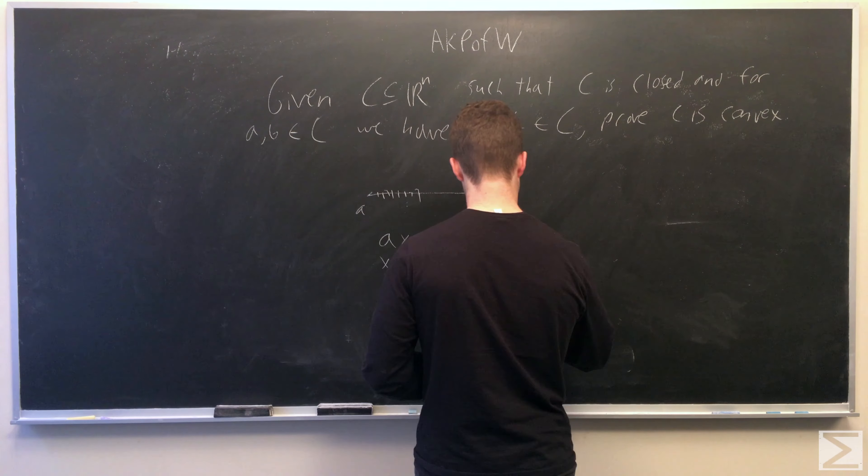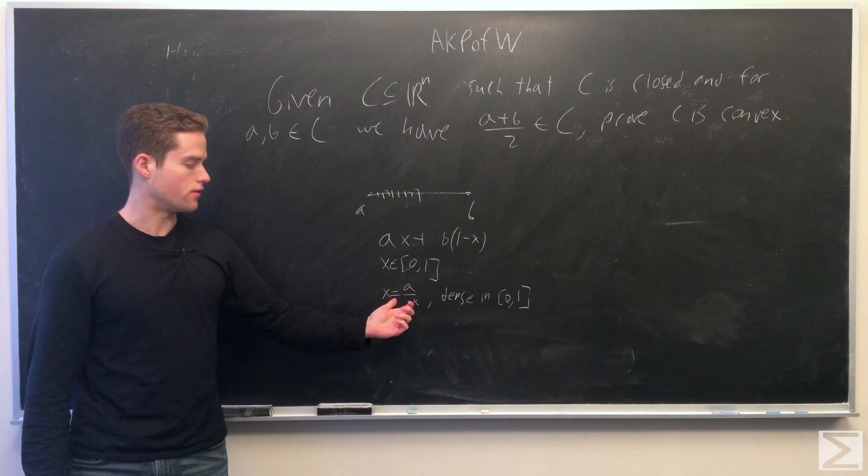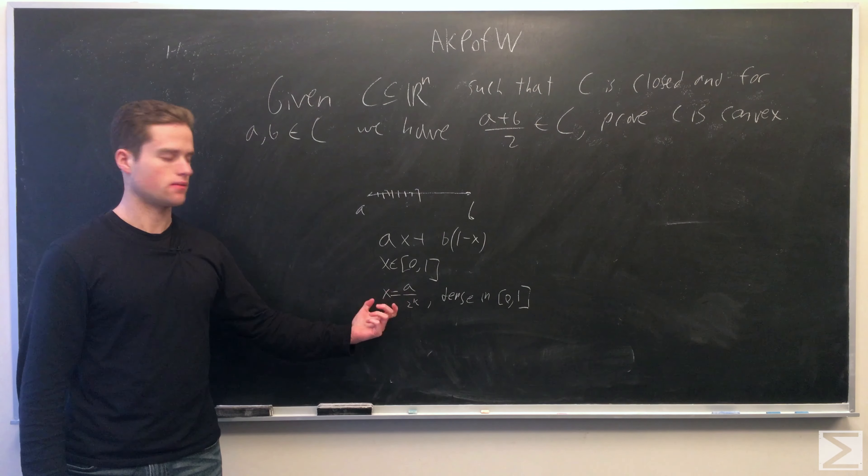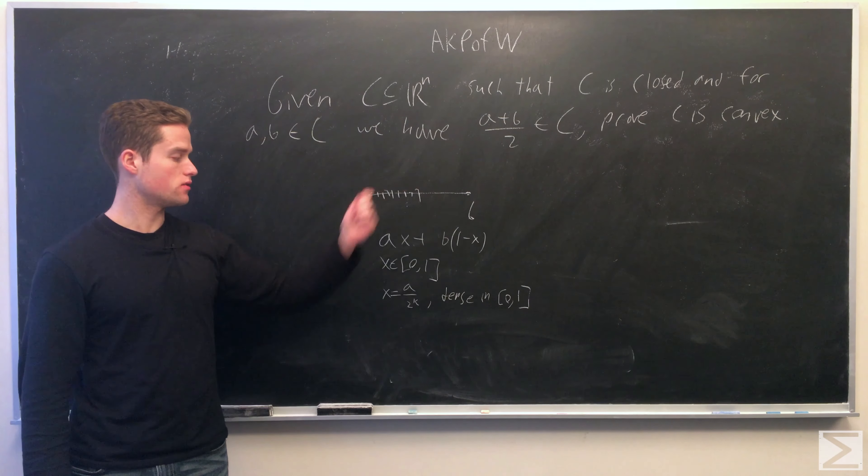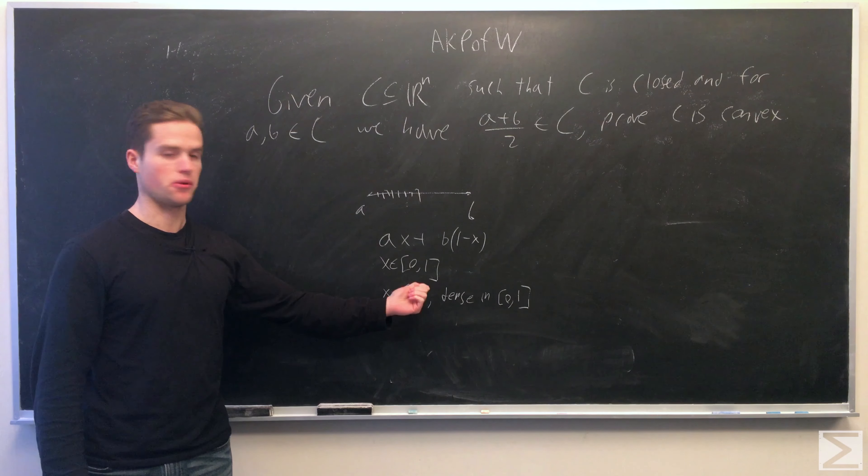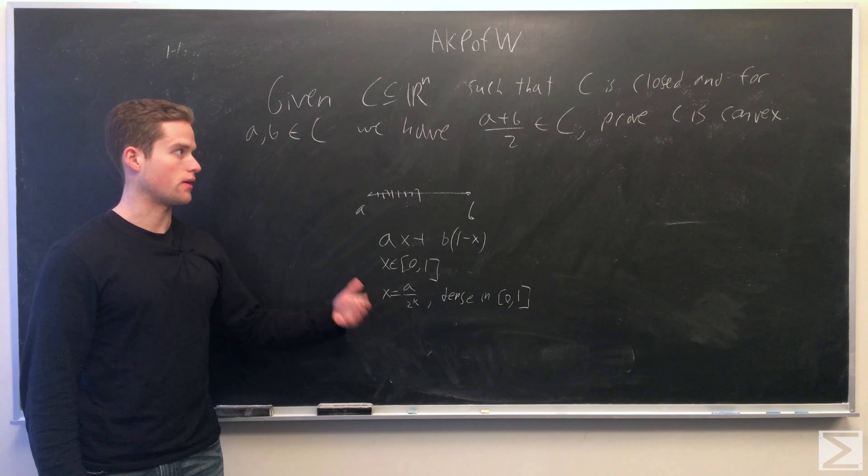This set of numbers, as we go through all the different integers that we allow, is in fact dense in [0,1]. Because this set is closed, we'll have in fact we just have x can be any number in [0,1]. And so that will lead us to prove that C is convex because we have any x in [0,1] that satisfies us.